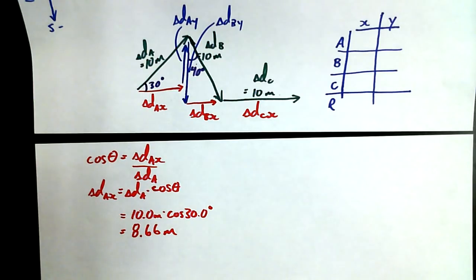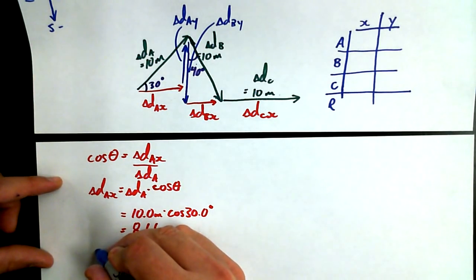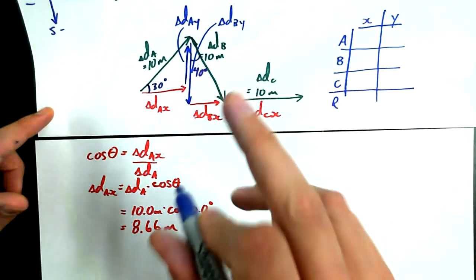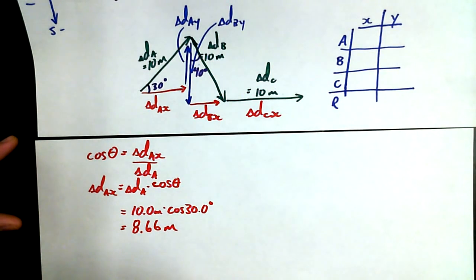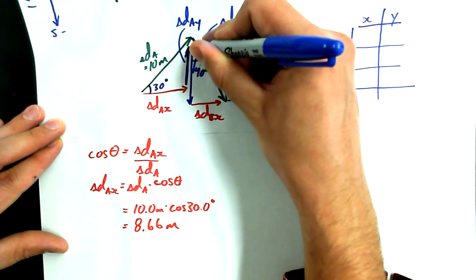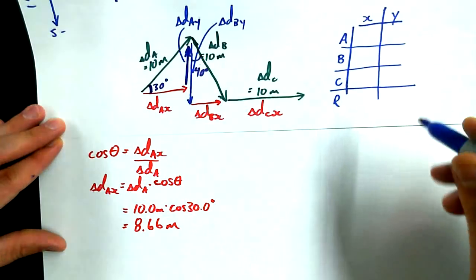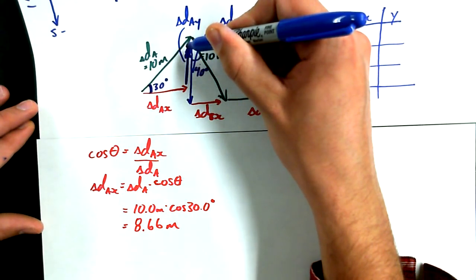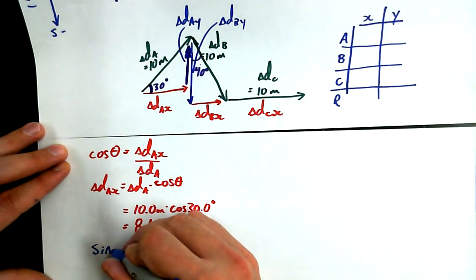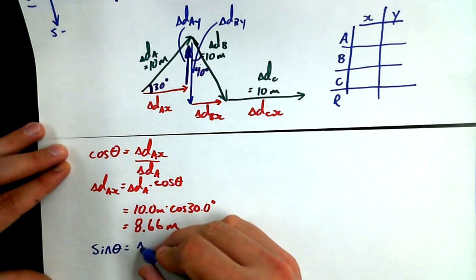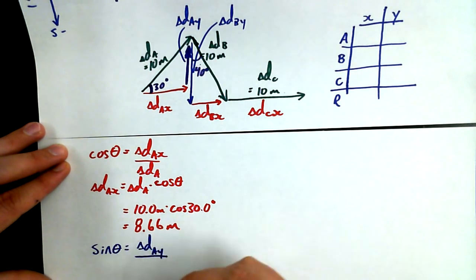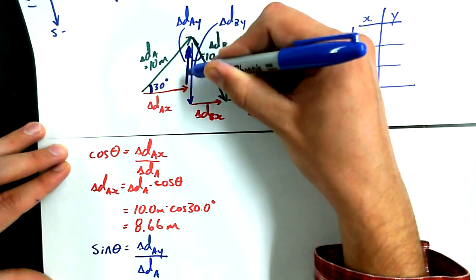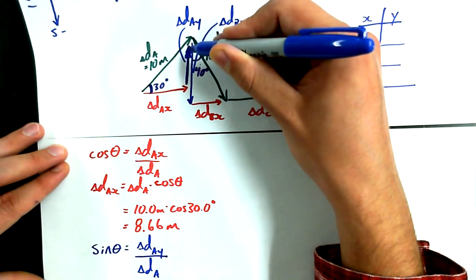Now we can do the same thing for the y component. And notice, if I want to find the opposite, that's the y component, and I know the hypotenuse and the angle, so is it soh-cah-toa? I want to know this opposite side, that is the opposite from this angle. Opposite, hypotenuse, so sine of theta.